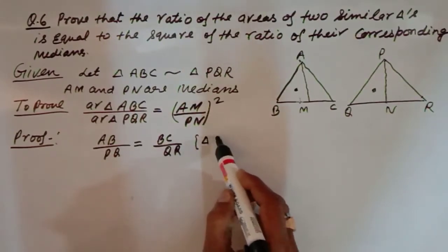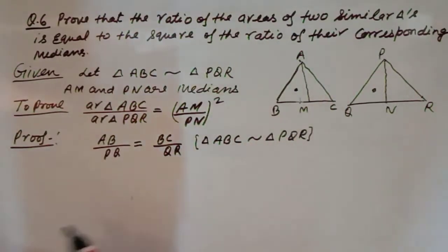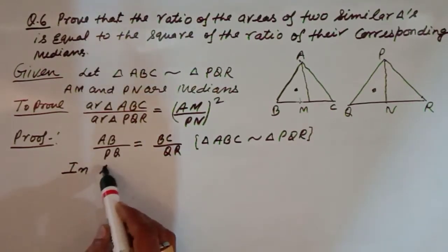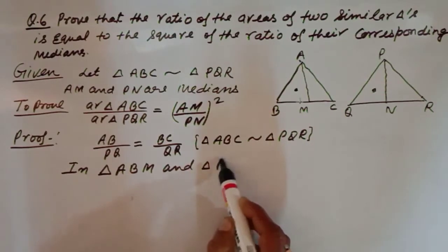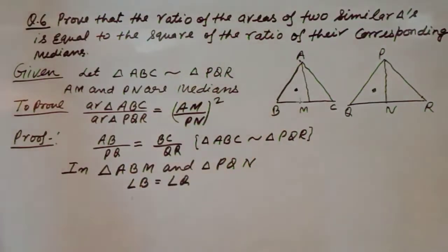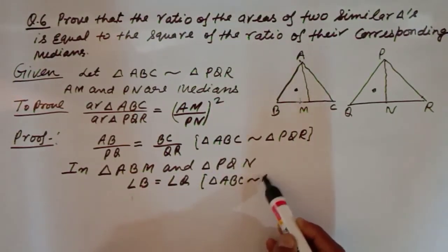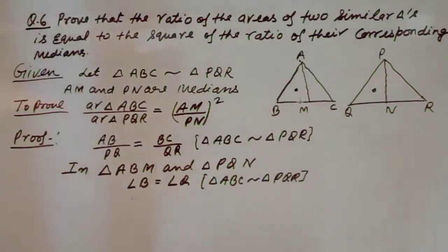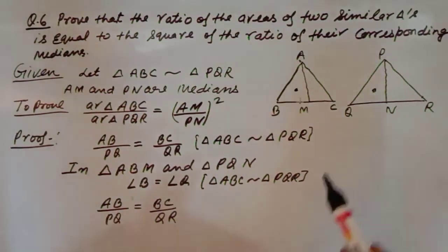These two ratios are equal because triangle ABC is similar to triangle PQR — that is given. Now the two triangles we want to prove similar are triangle ABM and triangle PQN. In these, angle B = angle Q — these two angles are equal because triangle ABC is similar to triangle PQR. Also, AB/PQ = BC/QR is already given.